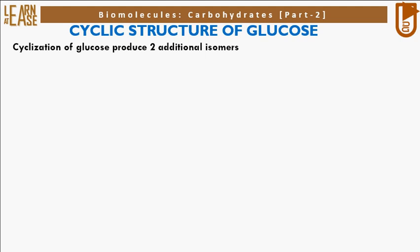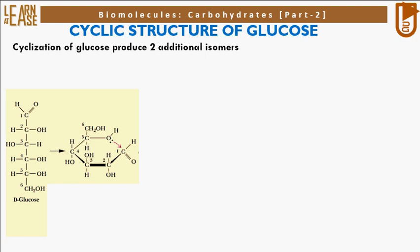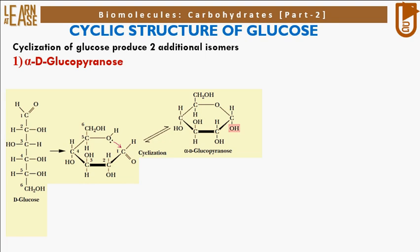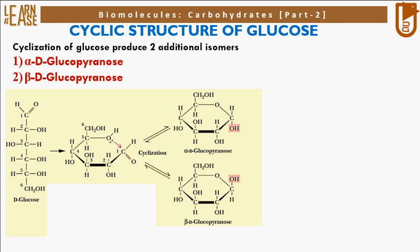Cyclization of glucose produces 2 additional isomers. The image describes the cyclization of glucose: the oxygen of the alcohol group on the C5 position of glucose — that is, the 5th carbon — reacts with carbon C1 by nucleophilic attack, as shown in the image, causing cyclization. On cyclization, two products are formed: alpha-D-glucopyranose and beta-D-glucopyranose.